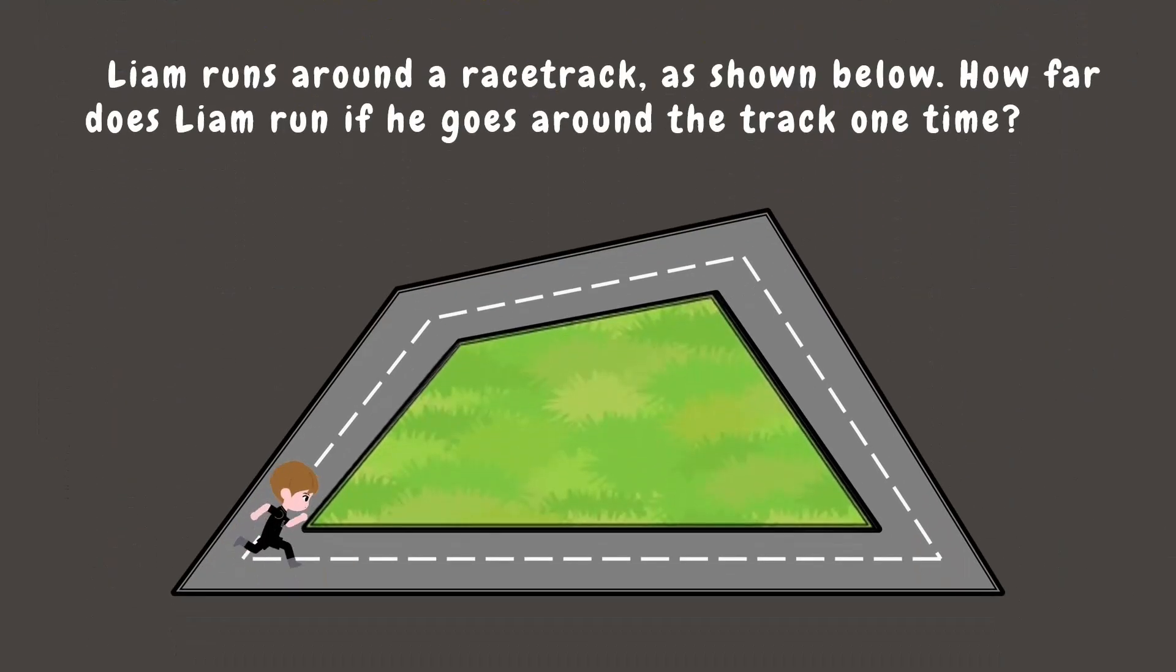Let's start with the story. Meet Liam. Liam loves to run around the racetrack. The sides of the racetrack are 45 meters, 40 meters, 35 meters, and 30 meters. If Liam runs around the whole track one time, how far does he run?